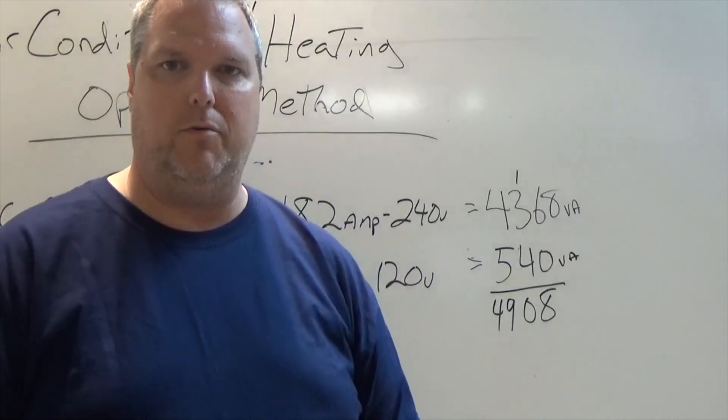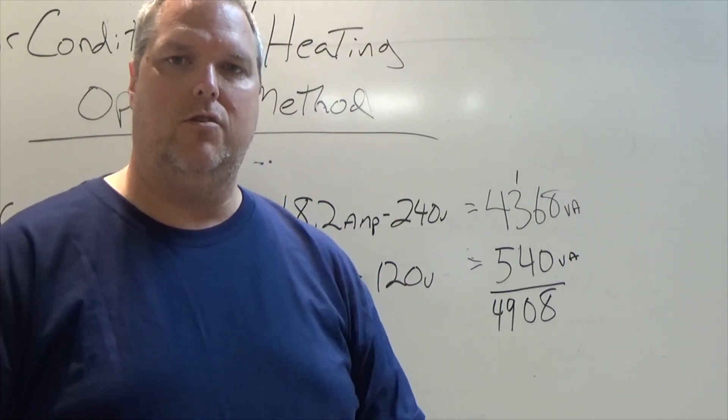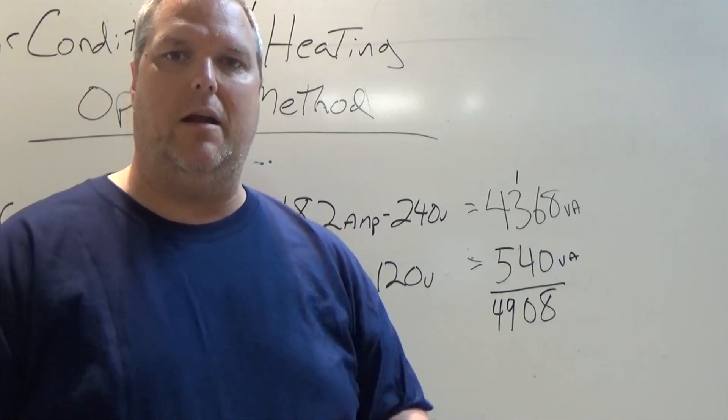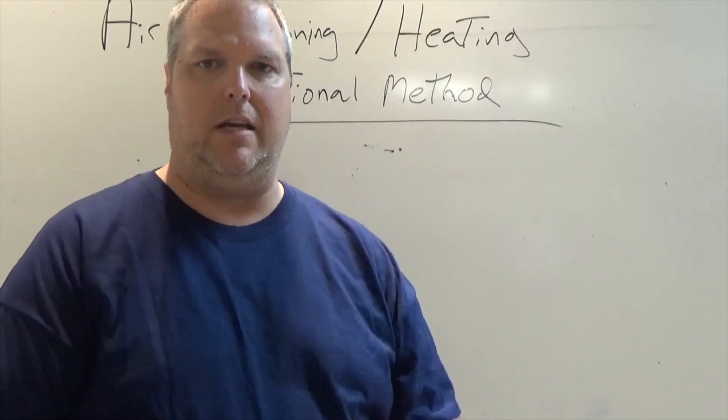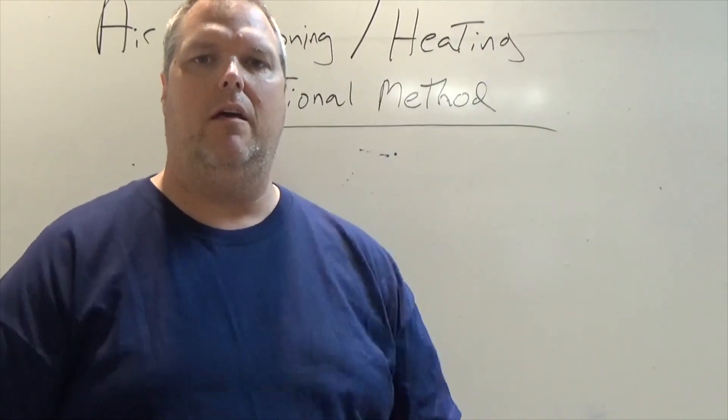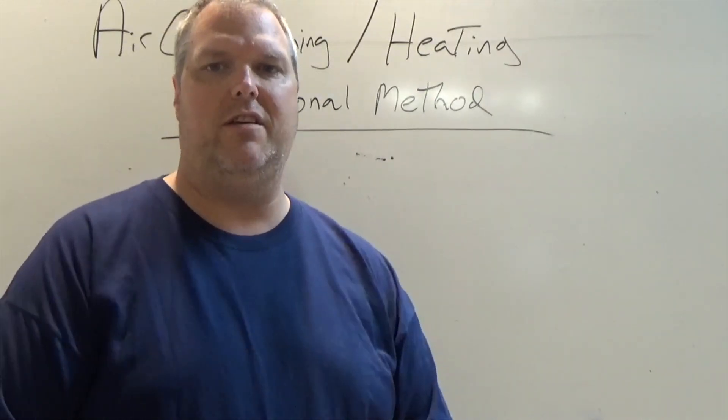So I add the two together and it gives me a VA for AC at 4908. 4908 is taken at 100% according to 220.82. So I'm going to take that, I'm going to put it aside and I'm going to compare the heating. So now that we've talked about AC, now let's talk about heat.